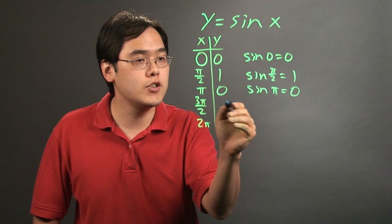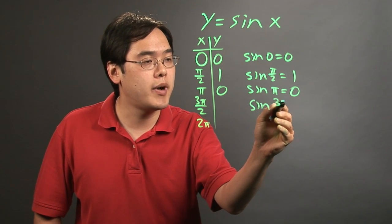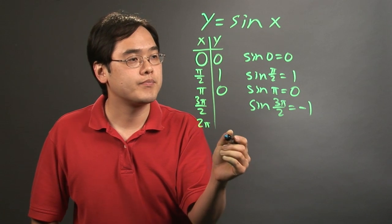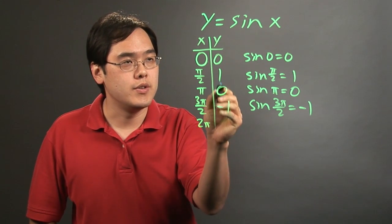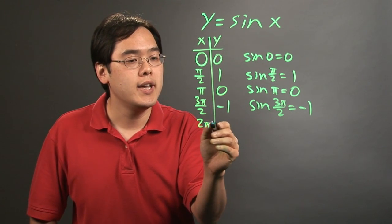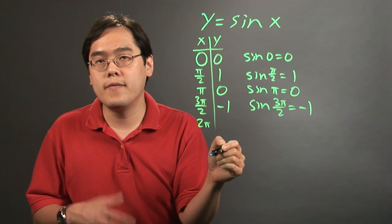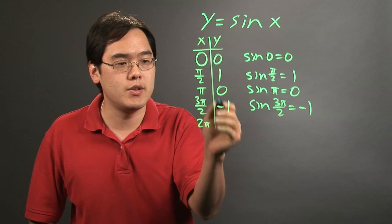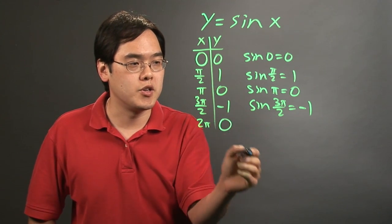For 3pi over 2, when you plug that in place of x, sine of 3pi over 2 is equal to negative 1. So y is negative 1. And then 2pi—you've come full circle, so 2pi is going to have the same value on the y side as 0. So y is going to be 0.